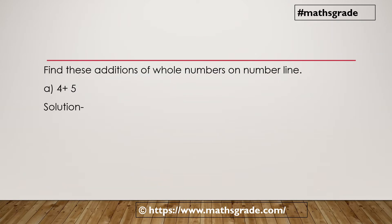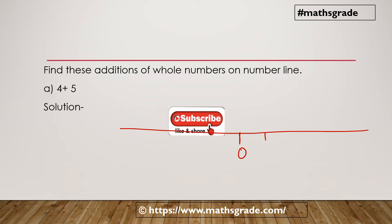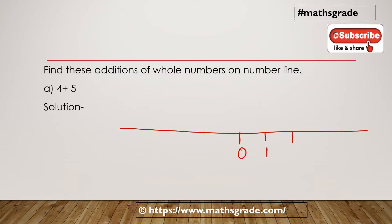Now we solve Question 1: find the addition of whole numbers on a number line. This is the 'Try These' questions. First bit is 4 plus 5. First, draw the number line. The middle point is 0; 4 and 5 are positive numbers. Positive integers are on the right hand side of the number line: 1, 2...